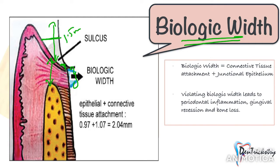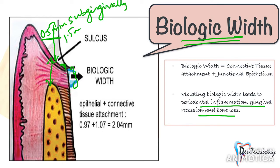What will happen if you violate the biologic width? It will damage your periodontal tissues, causing inflammation, gingival recession, and bone loss. I will try to cover the relation of biologic width and tooth restoration in depth in another video.